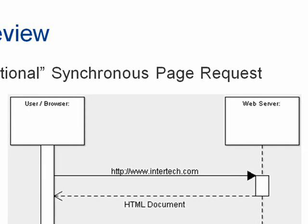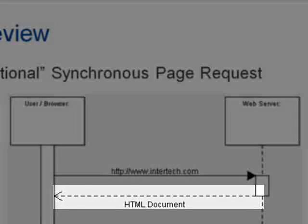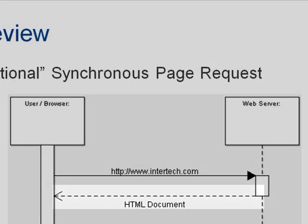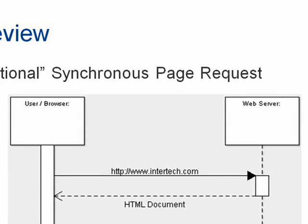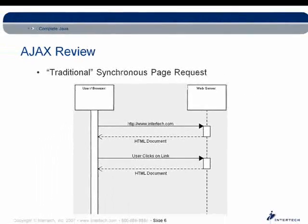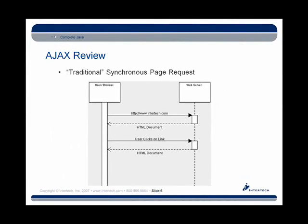Once the server finds the resource, it takes that — in this case an entire HTML document — and puts it into the body of an HTTP response. That response is sent back across the wire to the user's computer. The browser receives the response, parses through it, grabs the HTML markup, and uses that to paint the web page onto the user's screen. This is a synchronous request — we made a request and had to wait until the response came back, with nothing else we could do in between.